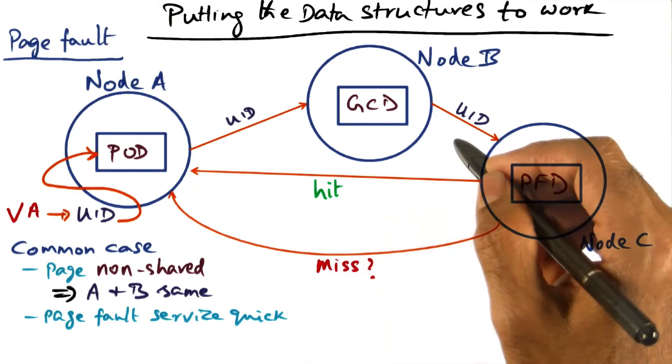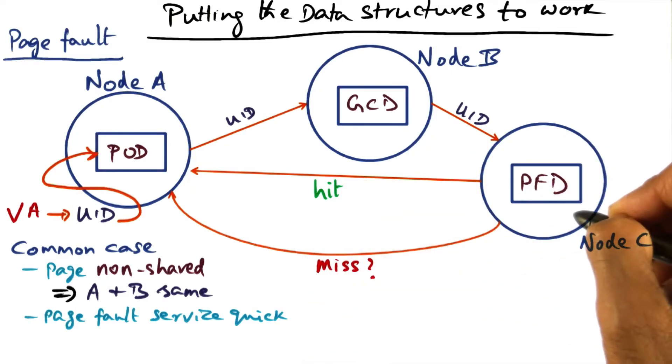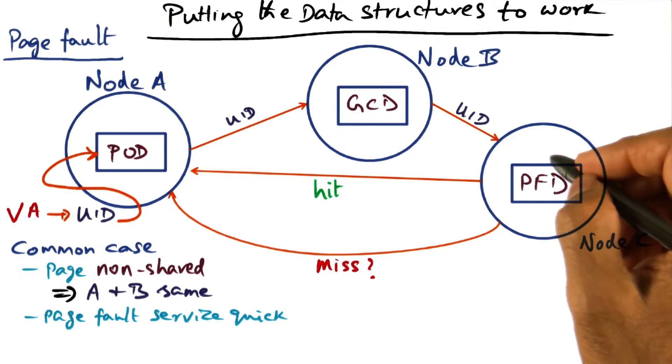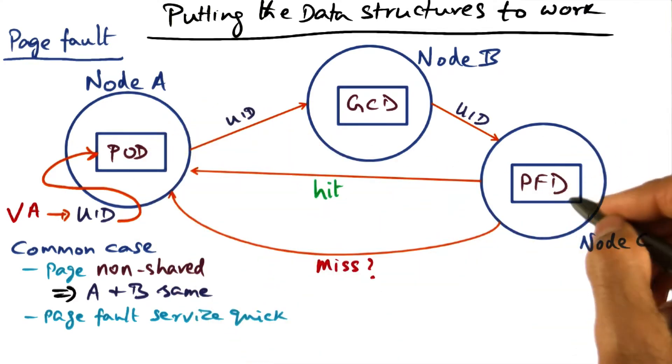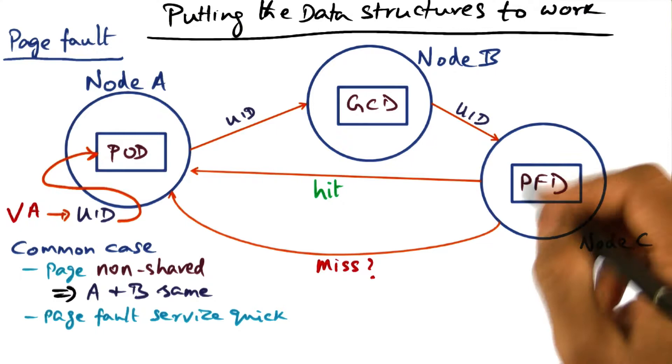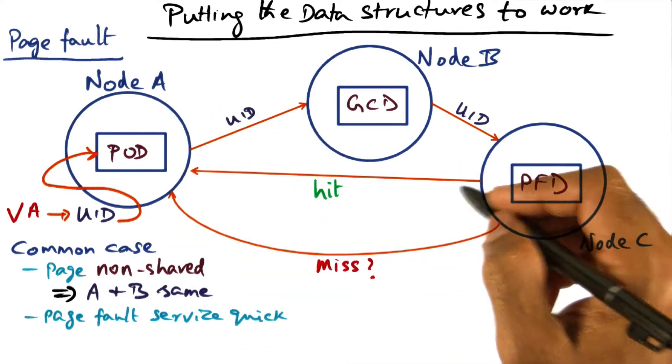Now the interesting question is, once I go to the node that I think is going to give me the page that I'm looking for, and at least information about the page that I'm looking for, whether it has it and it's going to give it to me, or if it doesn't have it, it's going to tell me that it is on the disk.